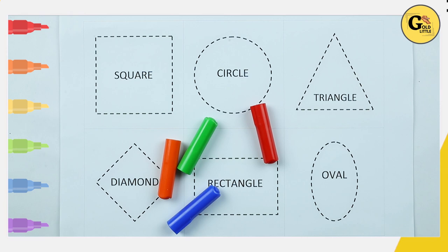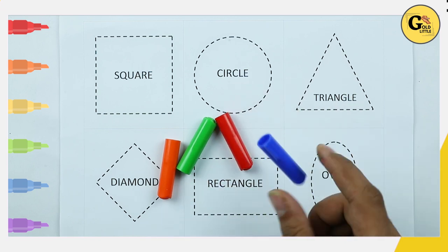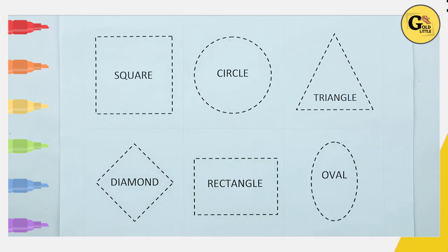Square, circle, triangle, diamond, rectangle, oval with colors: red color, blue color, orange color, green color. Let's start.